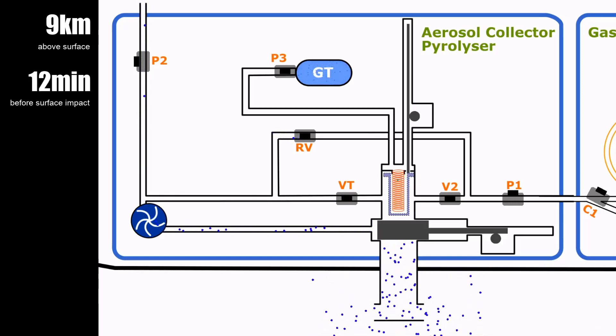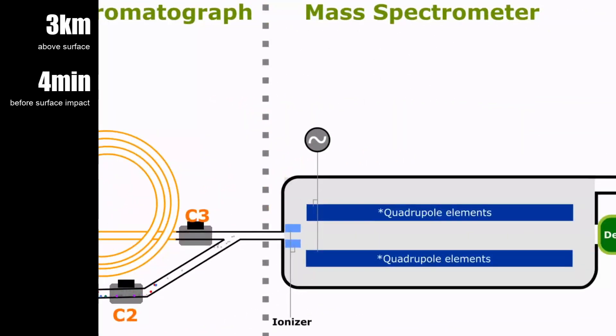12 minutes before surface impact, gas product is transferred to the GCMS. Since the probe has less than 12 minutes before impact and the gas chromatograph takes about 10 minutes, it is skipped by closing valve C1, sending the gas product directly to the mass spectrometer for analysis.